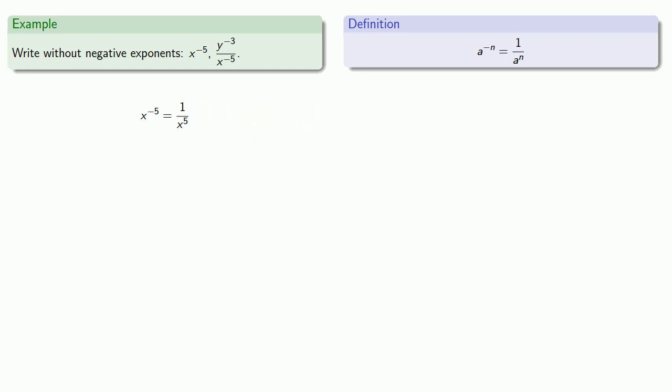Or we could take a somewhat more complicated expression, y to power negative three over x to power negative five. So y to power negative three is one over y to the third. And x to the negative five is one over x to the five. Now, we'll clean this up a little bit. This is a compound fraction, so we'll invert and multiply. And we'll end up with a simpler expression without negative exponents, x to the five over y to the third.